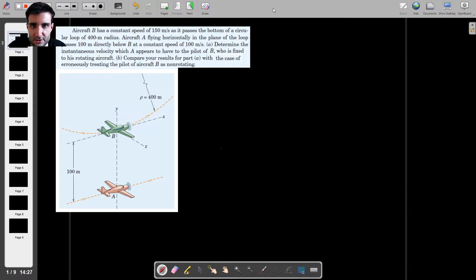Now let's read the question and try to understand it. So we're dealing with two aircraft, and we know that aircraft B has a constant speed, not velocity, but a constant speed of 150 meters per second. And in this particular moment, it passes the bottom of a circular loop, which has a radius of 400 meters.